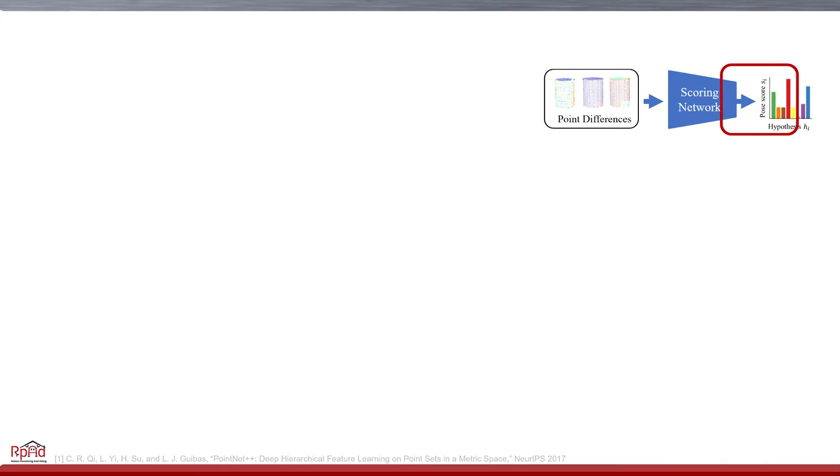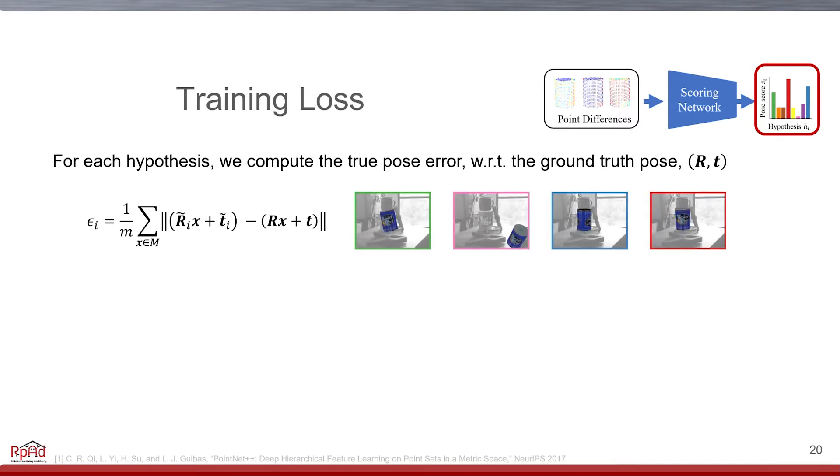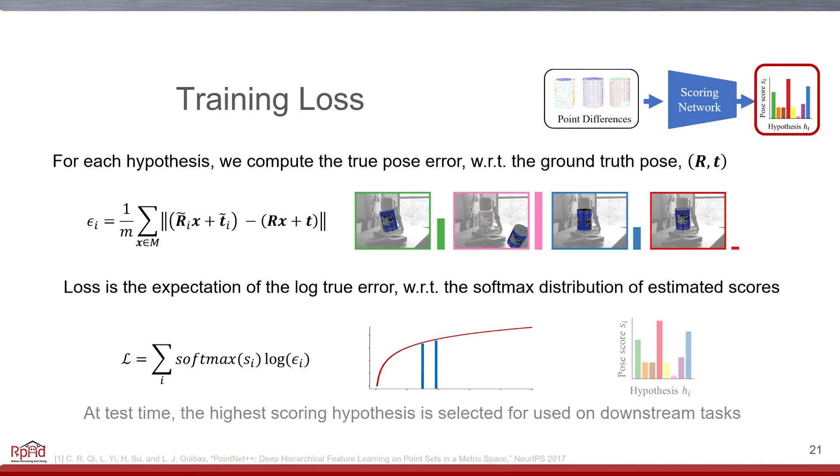To supervise this network, we compute the ground truth error of each estimated hypothesis, as the average position difference of the object points at the estimated and the ground truth pose. During training time, the network sees a wide distribution of the pose, and learns to reject incorrect ones. We then use the expectation of the log of this error as a loss. Specifically, the log here makes the score differences near the correct pose far more important than the wrong ones. At test time, we select the highest scoring pose for the downstream task.